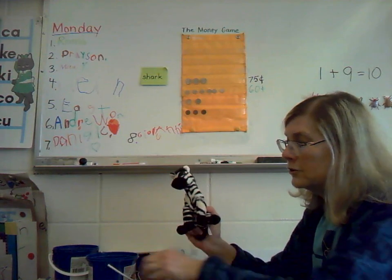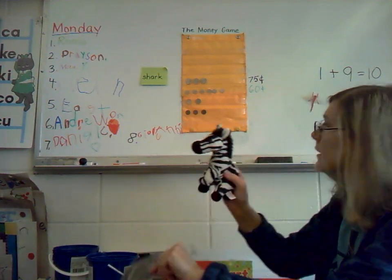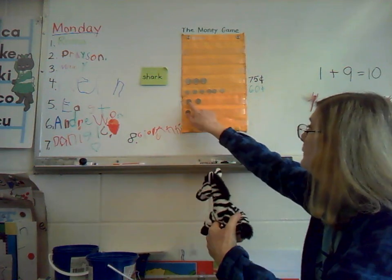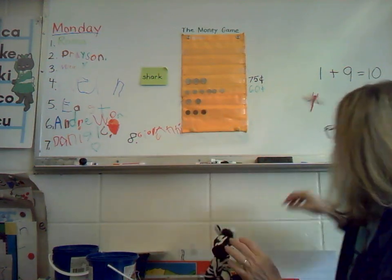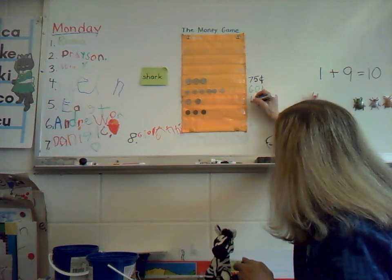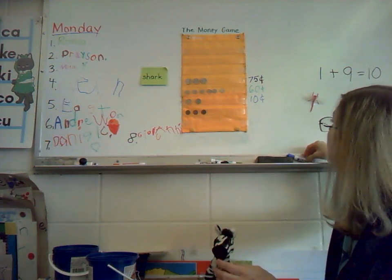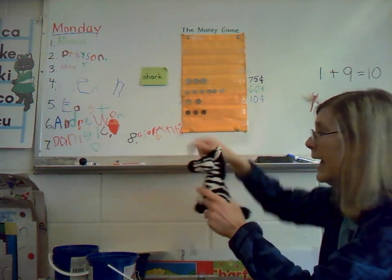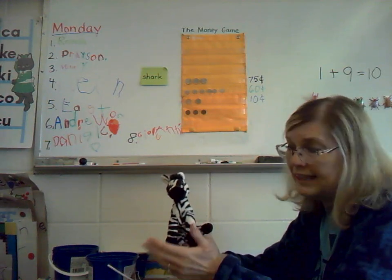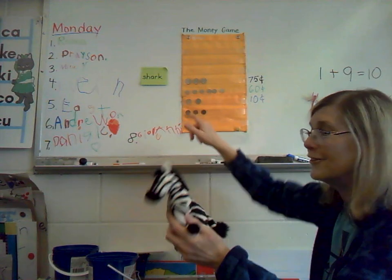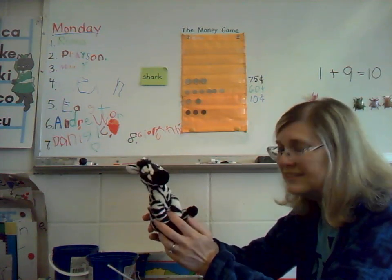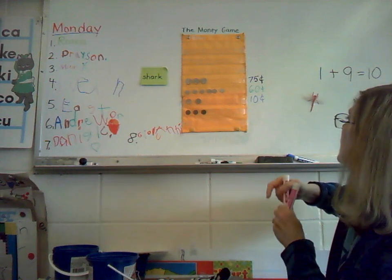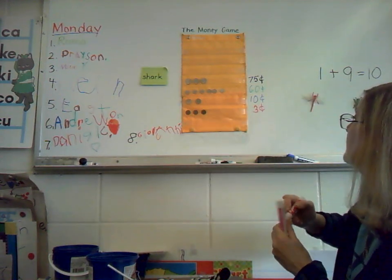Nickels are next. Those are the ones with Thomas Jefferson, right? I got one, two nickels. And since they're worth five cents each, that would be five, ten — 10 cents. He got 10 cents in nickels. And how many pennies did you get? I got one, two, three pennies. And so how many cents did you get in pennies? One, two, three cents — because pennies are worth one cent, so we count by ones. He got three cents in pennies.